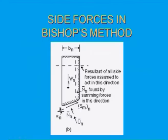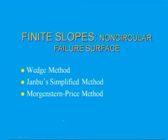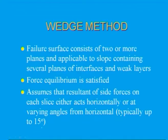Now we are going to start finite slopes with non-circular failure surfaces. Case 1 is the wedge method. Case 2 is the Janbu simplified method. Case 3 is the Morgenstern-Price method. Let us begin with the wedge method.